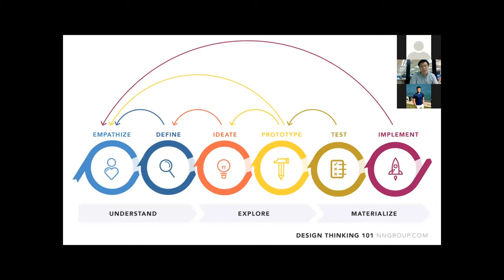After the empathize stage — understanding how users feel at each stage — we move to defining the problem. The second stage of understanding users is to define the root problem so we can ideate and generate ideas to solve those problems. We don't have time to cover all of that today.